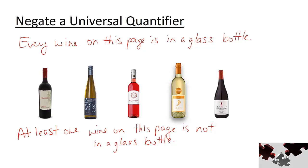Notice that to negate a statement involving a universal quantifier (UQ), we needed a statement that contained an existential quantifier (EQ). In addition to this, our negated statement also needed to use the word not.